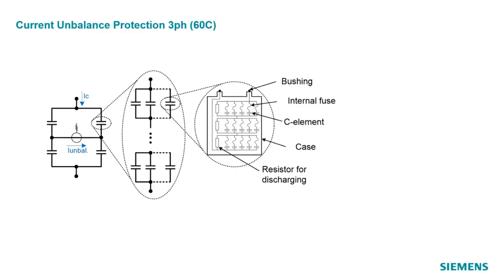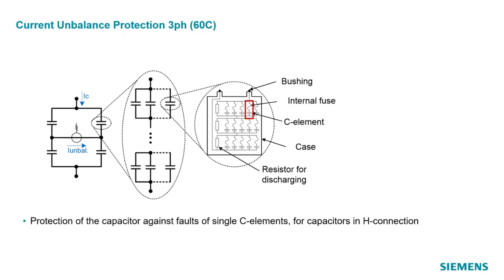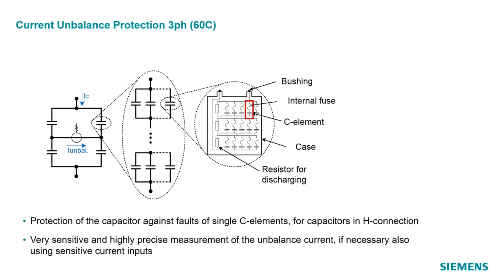The current unbalanced protection detects the failure of single capacitor elements in a cap bank. As shown in the picture, each of the four overall capacitors in the H-topology normally consists of several so-called cans in parallel and series, and each can is built up by a certain number of capacitor elements in parallel and series. The defect of a single element results in higher voltage that the other elements must cope with — additional stress for them. The more elements get broken, the higher the voltage for the remaining elements becomes, which is why all single element defects must be detected. The unbalanced current caused by a single defect is relatively small, so the function needs a very sensitive and highly precise measurement. If necessary, sensitive current inputs can be used.